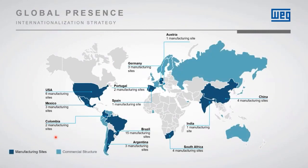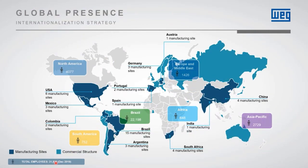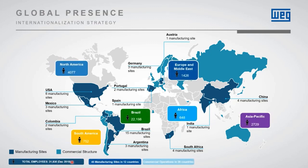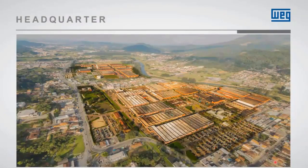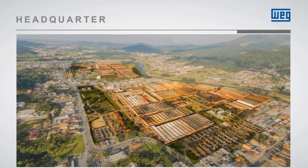Regarding VEG's global presence, we are close to 32,000 employees worldwide, 45 manufacturing sites in 12 different countries, commercial operations within 36 countries, distributors and agents in 120 countries, and sales to over 135 countries around the world. Our headquarters is located in Brazil, Jaraguá do Sul city, where we have around 15,000 employees working for the different VEG business units.